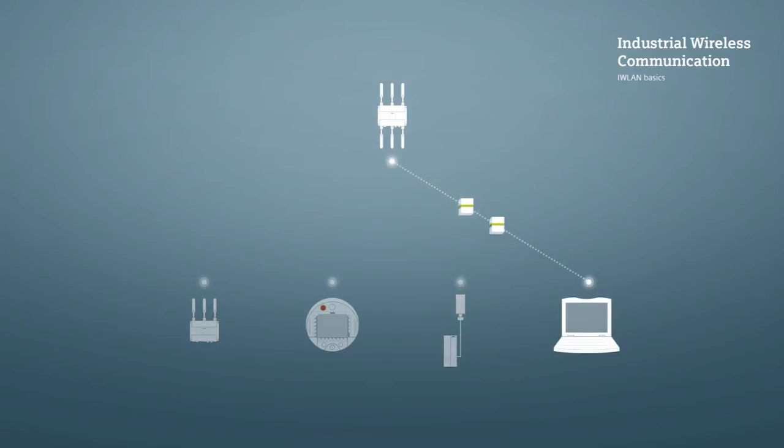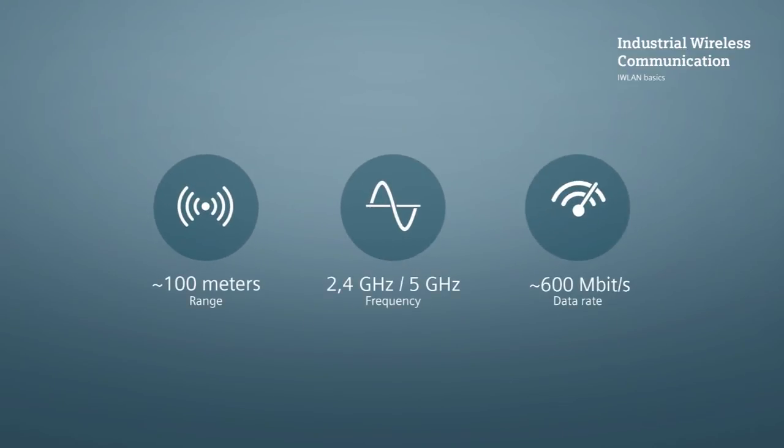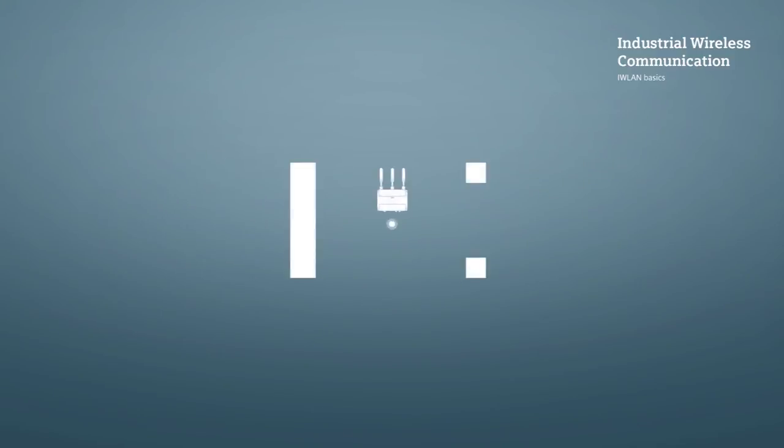However, the differences lie in the detail. Range, frequency and data rate mainly correspond to the performance of a normal wireless LAN network at home. However, regarding reliability, Industrial Wireless LAN is clearly ahead.